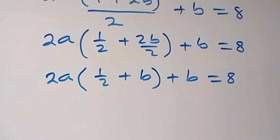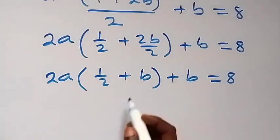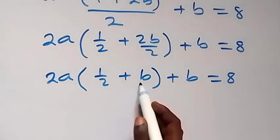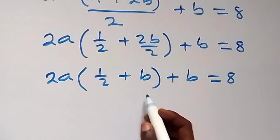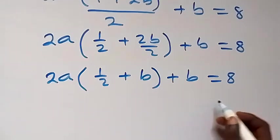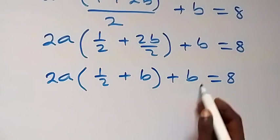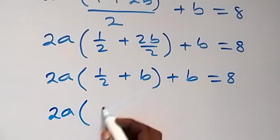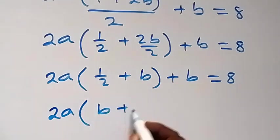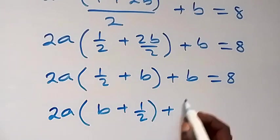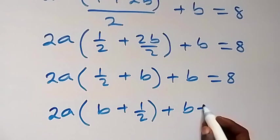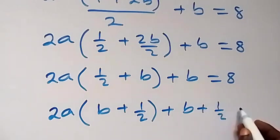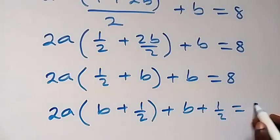Then we can make what we have here and create it also on this side. We have b plus ½ here, which is also b plus ½. So let's add ½ to both sides in order to have b plus ½ here. Then we have 2a into bracket, same thing as b plus ½, then plus b plus ½. Then we also add ½ to this side, we have 8 plus ½.